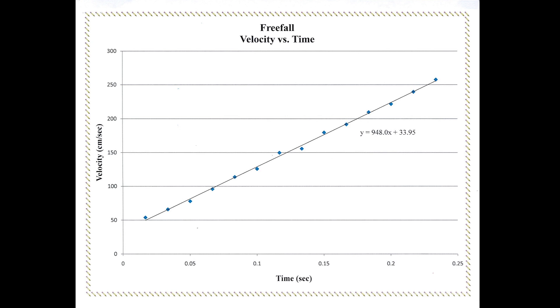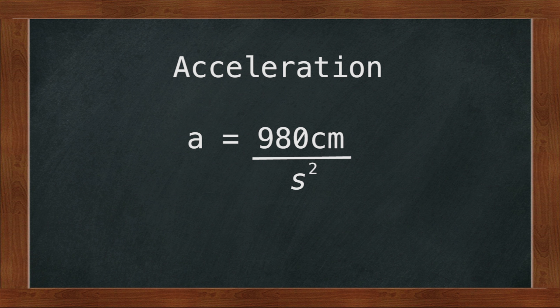Since the acceleration in our experiment is due to gravity alone, the value of our slope should give us the value of the acceleration due to gravity, approximately 980 centimeters per second squared.